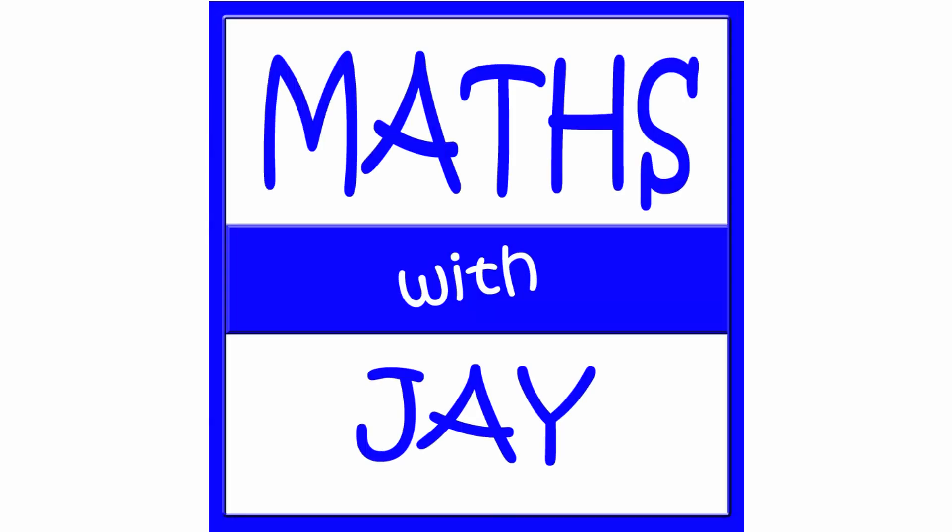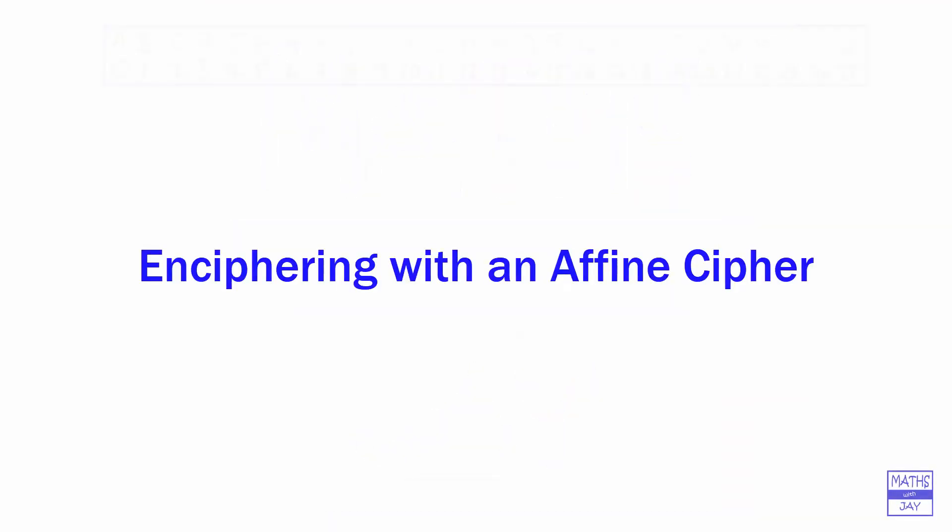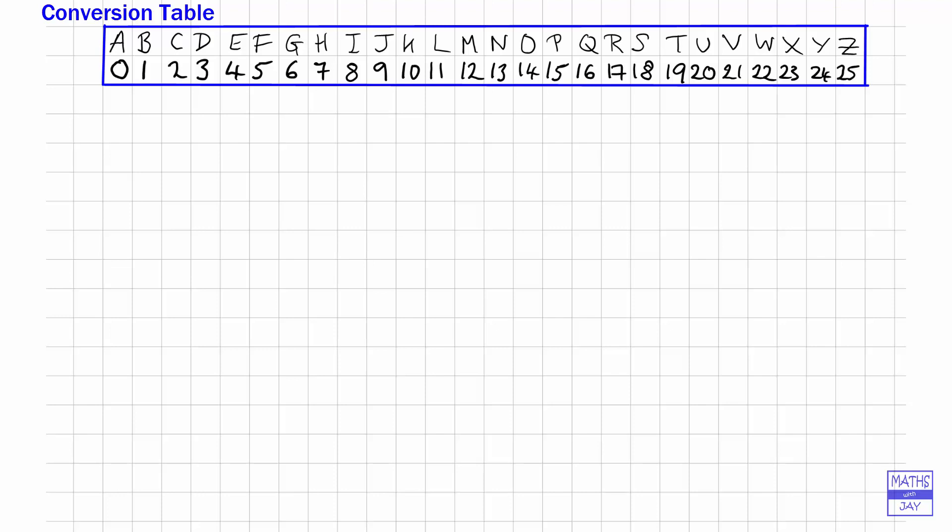Hello, welcome to Maths with Jay. Here we're going to be using an affine cipher with modular arithmetic. You can see I've already written out a conversion table. We're using modulo 26, so the numbers from 0 up to 25 represent the letters from A to Z.